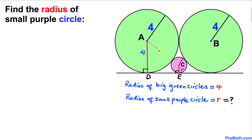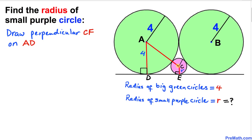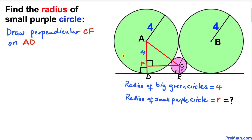In our next step, let's go ahead and connect centers A and C. Here's our much nicer looking diagram. Now let's draw the perpendicular CF on line segment AD, where point F is located here.